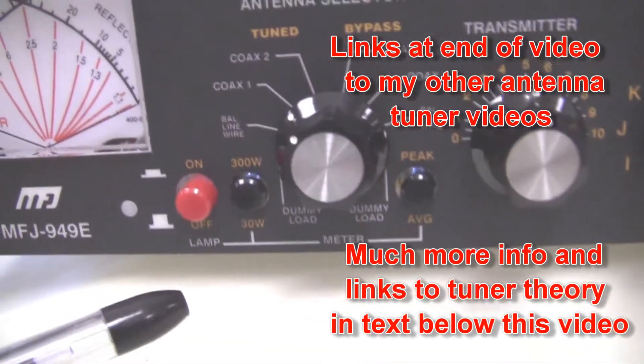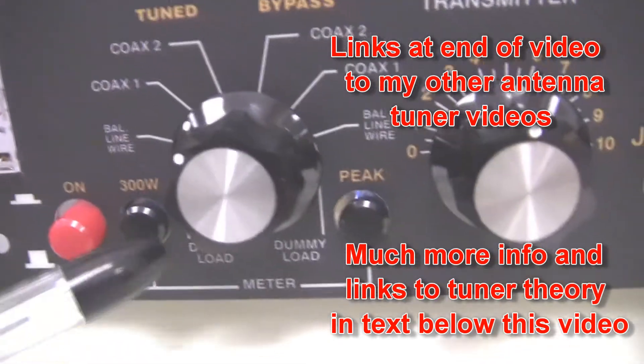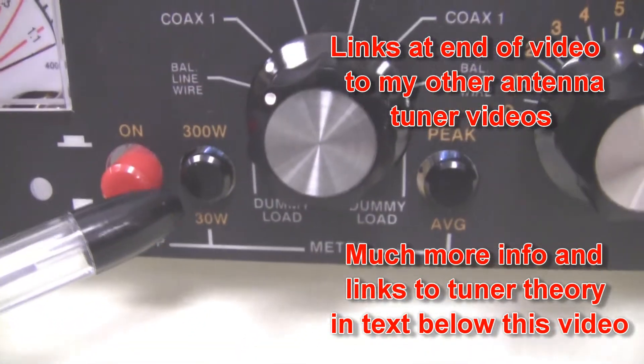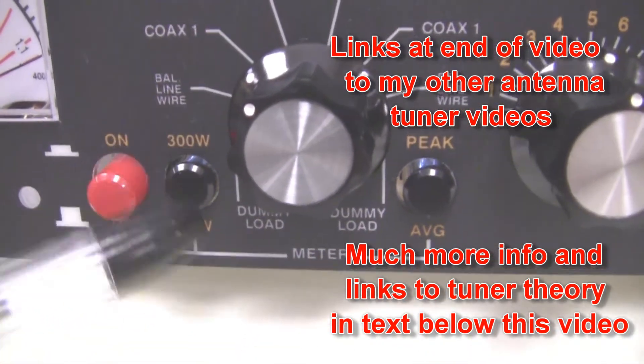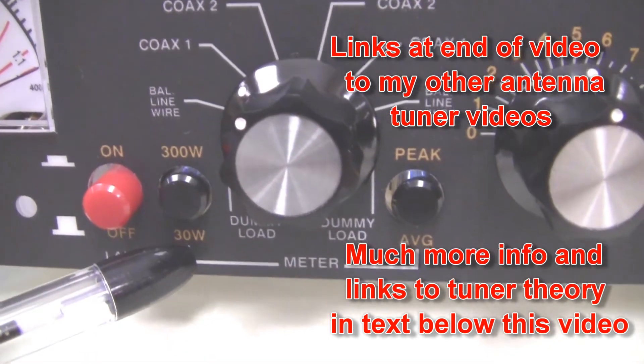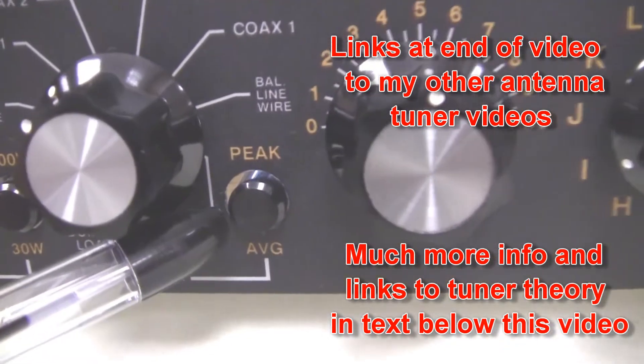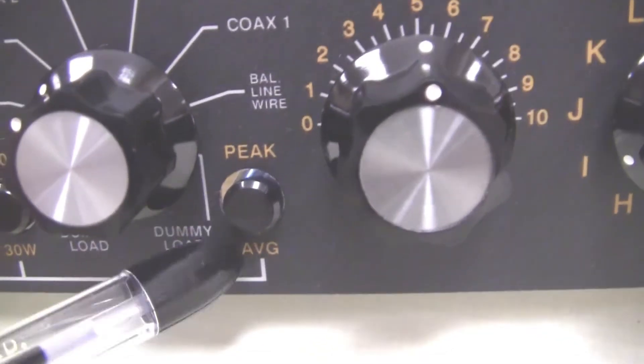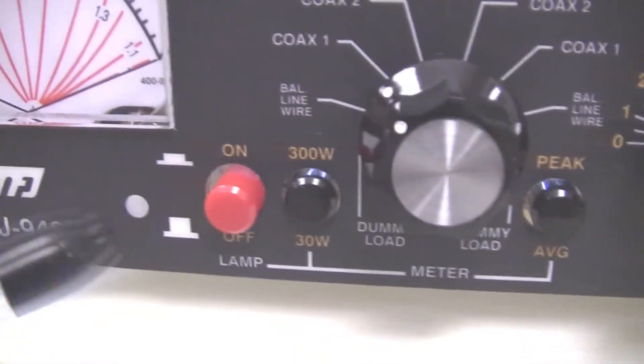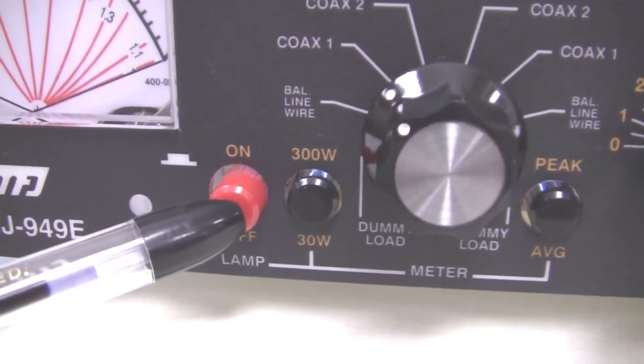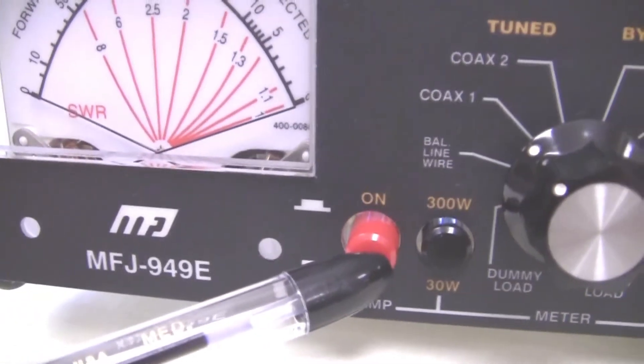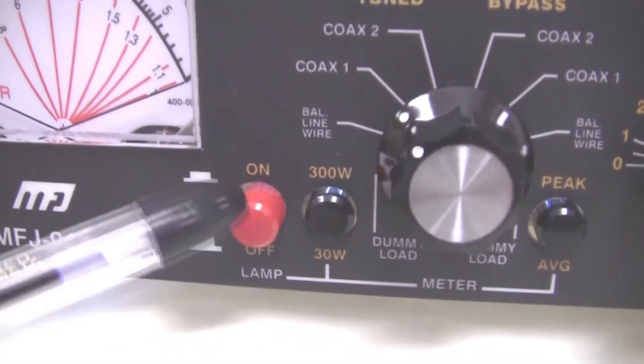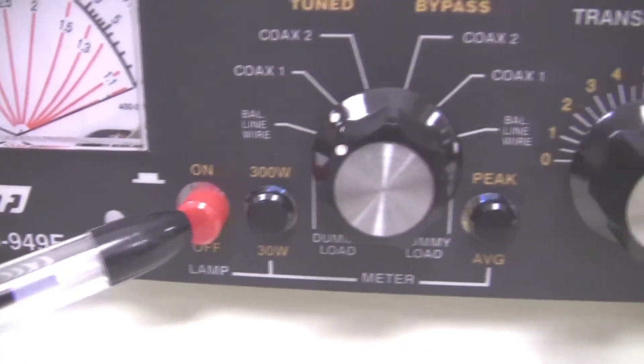The controls that go with the SWR meter: here we have a control where we can have the meter reading 300 watts or 30 watts full scale. Another control over here for peak reading or average reading. This red button here is for turning the light on in the meter only. The whole antenna tuner works without this, but if you want a lighted meter, you use this.